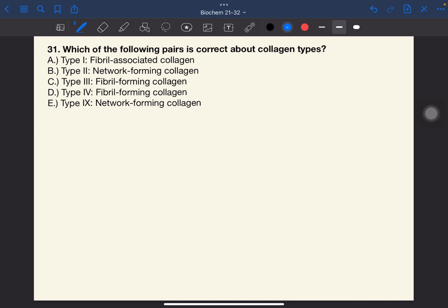Number 31. Which of the following pairs is correct about collagen types? The answer to this one is C, fibril-forming collagen. To review, fibril-forming is types 1, 2, and 3.